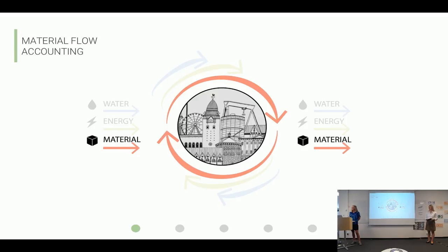In this thesis we are focusing specifically on materials. A common method to comprehensively estimate mass material flows is Material Flow Accounting, or MFA. MFA provides data on the flows and stocks of materials within a system and can be used to identify opportunities where flows can be made more efficient. Today this type of data is mainly used on a national level but not so much on a regional level.